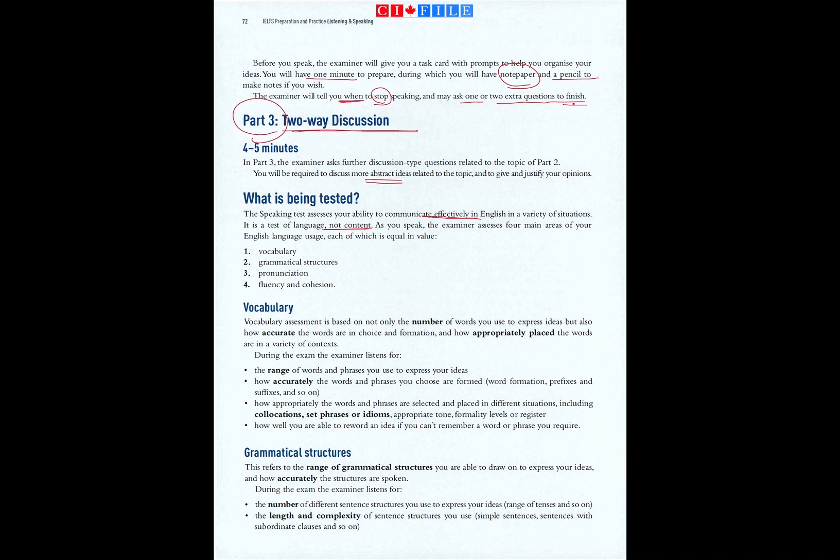The four assessed areas are: number one, vocabulary; two, grammatical structures; three, pronunciation; and four, fluency and cohesion.